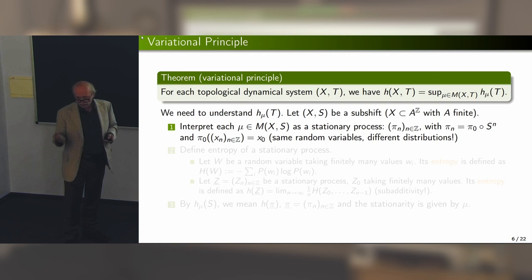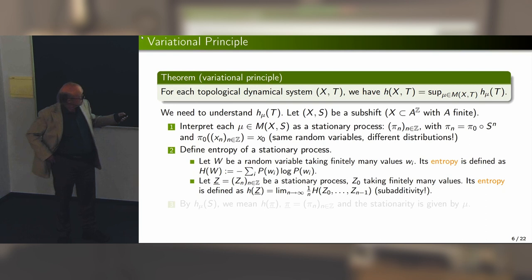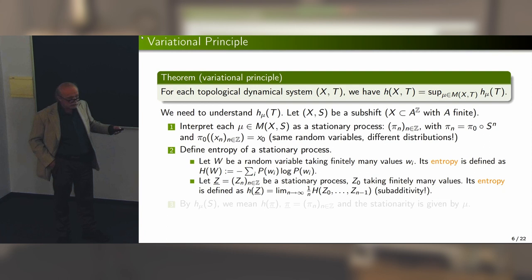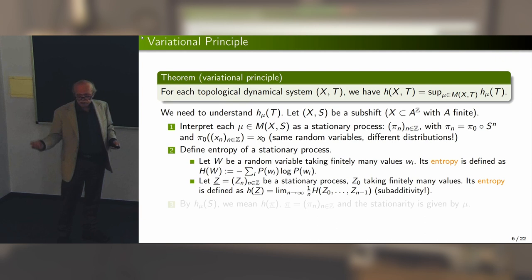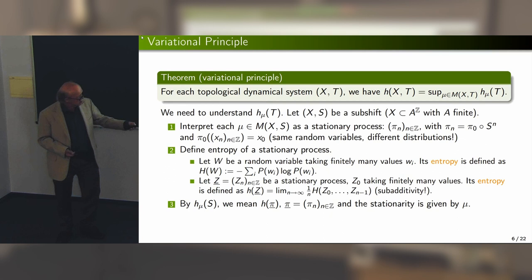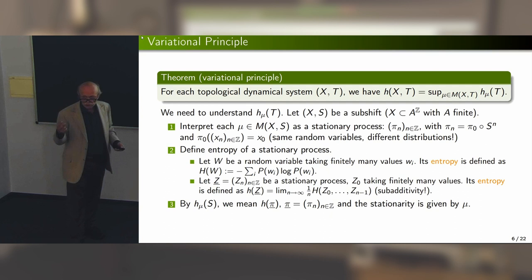The entropy of a single random variable is defined by the well-known formula H = -sum p log p. For a process, we form the vector W of the first n variables, compute its entropy — this gives a sub-additive sequence — and pass to the limit. That's the definition of the entropy of a stationary process, and by the entropy of the measure we understand the entropy of this process.